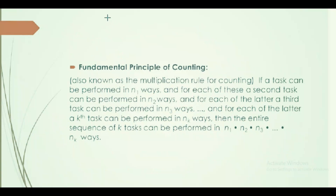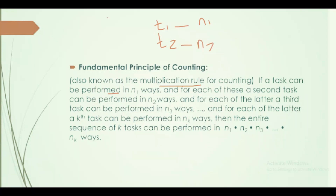A permutation is a counting technique. One counting technique is the multiplication rule. If task one can be performed in N1 ways, and task two can be performed in N2 ways, then both tasks together can be performed in N1 times N2 ways. This is the multiplication rule.